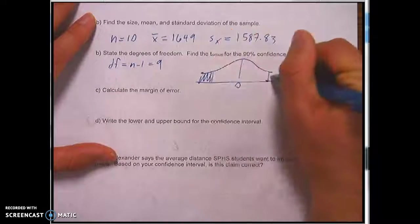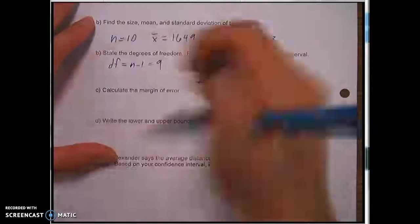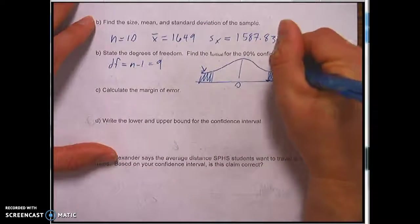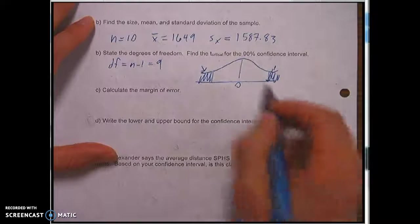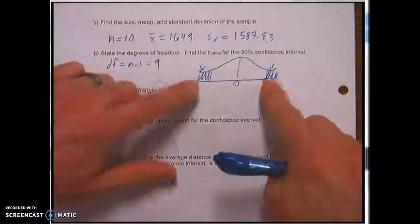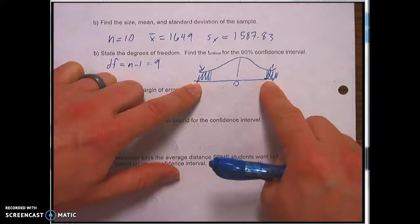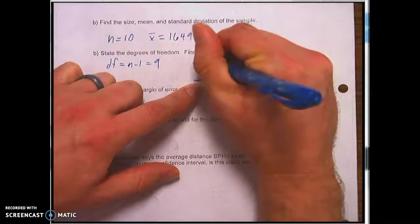Also, confidence intervals are always two-tailed, which means that the two tails must add up to 10%. The 90% is the white part. The 10% is the shaded part. So that means that these each have to be 0.05.